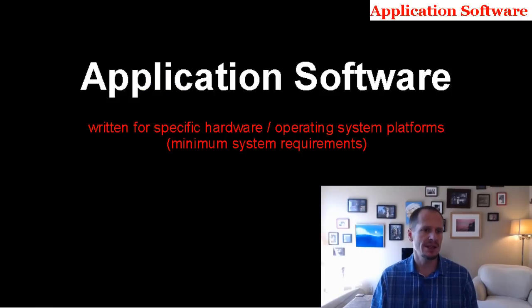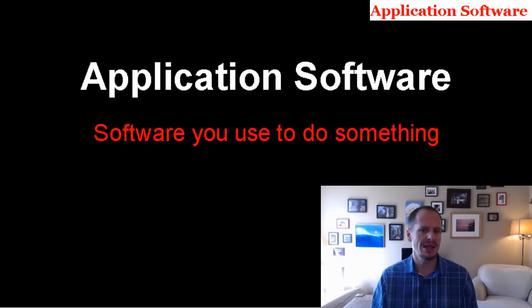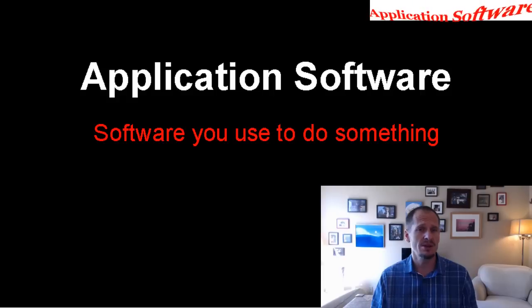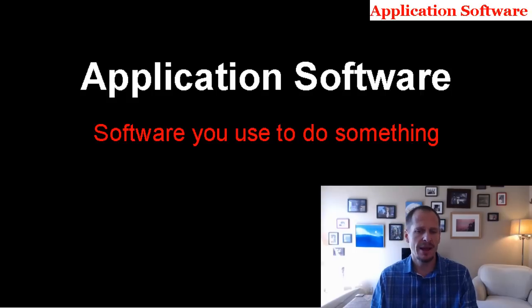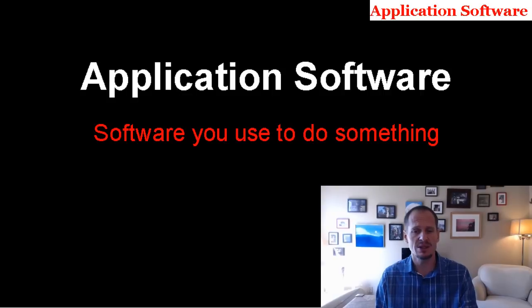So what's the basic definition of application software? It's software you use to do something. The word 'application' — like 'I'm going to apply myself' — directly denotes that you're applying your computer to doing a specific purpose right now. Application software: software used to do something.